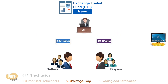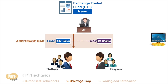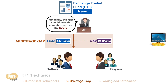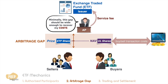Based on these arguments, the ETF share should trade within a price band around the NAV known as the arbitrage gap. Minimally, this gap should be wide enough for the AP to recover the costs incurred in the creation or redemption process. This includes transaction costs in the purchase and sale of underlying securities, and also a service fee paid to the ETF manager.